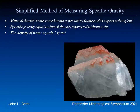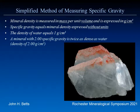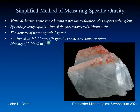The density of water, for comparison, is one gram per cubic centimeter — at least liquid water. So a mineral with a specific gravity of two is twice as dense as water, therefore two grams per cubic centimeter.